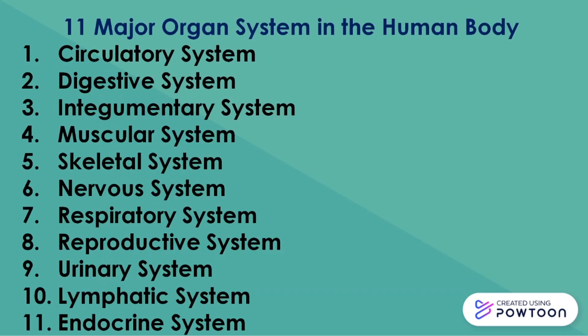What are the different human body systems? There are 11 major organ systems in the human body. These are the circulatory system, digestive system, integumentary system, muscular system, skeletal system, nervous system, respiratory system, reproductive system, urinary system, lymphatic system, and endocrine system.